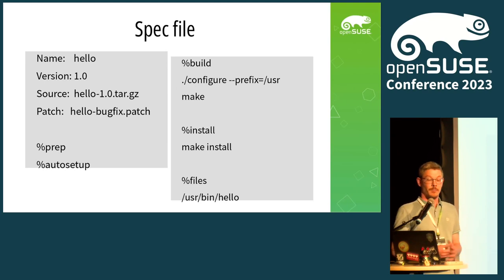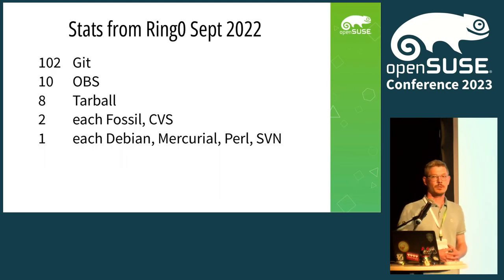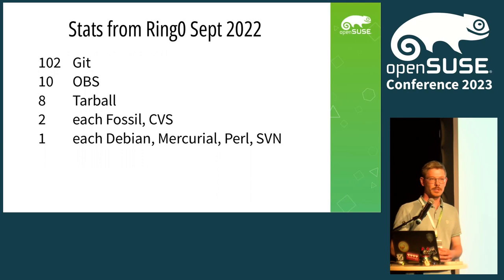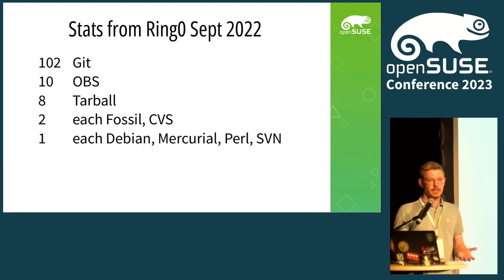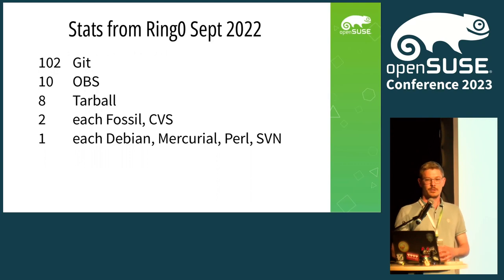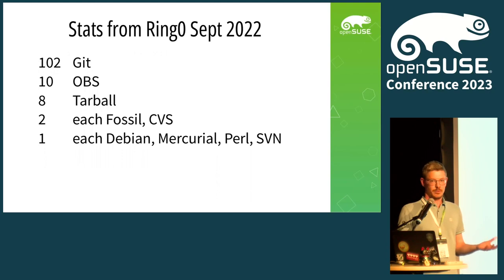So what does that mean for distributions? Let's take a look at Ring Zero — the bootstrappable core of OpenSUSE Factory — and look at what upstream revision control systems were used there. As you can see, the vast majority is actually Git. Most projects use Git. There's about 10 that are mostly our own software that just store the sources directly in OBS but could be put into Git. There are eight that still use tarballs, and two each for some old version control systems. So clearly, Git is the authoritative source of upstream software nowadays.